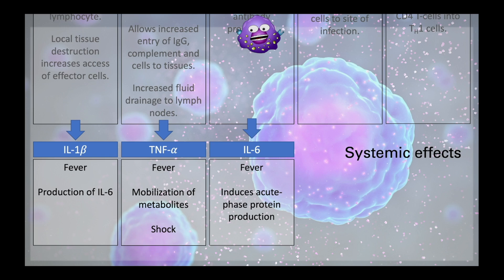There is an upregulation of C-reactive protein or CRP, fibrinogen, serum amyloid A, as well as some of the complement proteins, which we will discuss in a future video. CRP is used clinically as a measure of systemic inflammation. In combination with the increased cytokine levels, these acute phase proteins help drive the systemic immune response. There is also a feedback loop to the hematopoietic stem cells in the bone marrow, for example, increasing the number of neutrophils in response to an infection, in particular a bacterial infection.